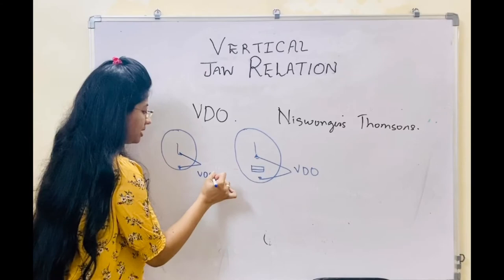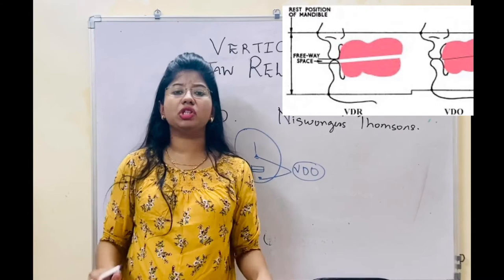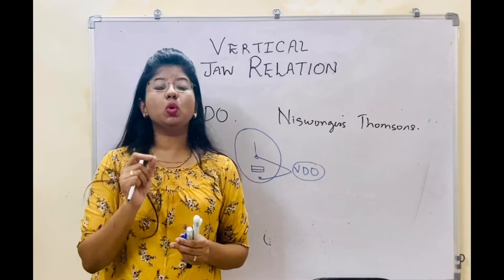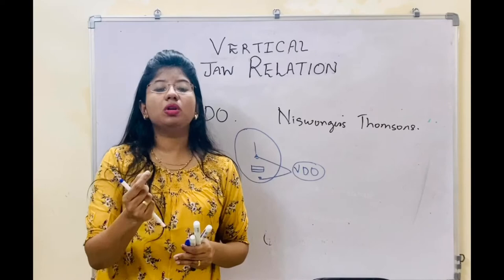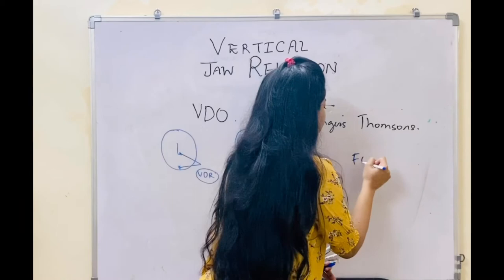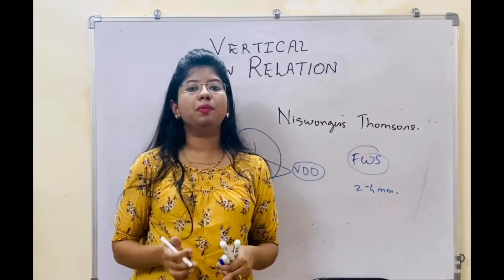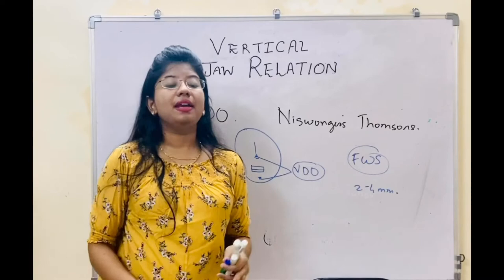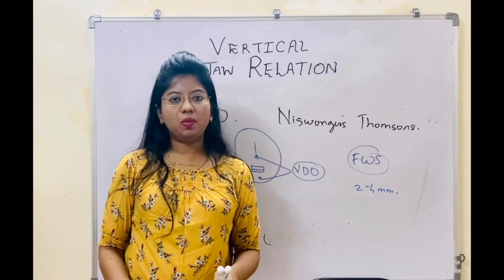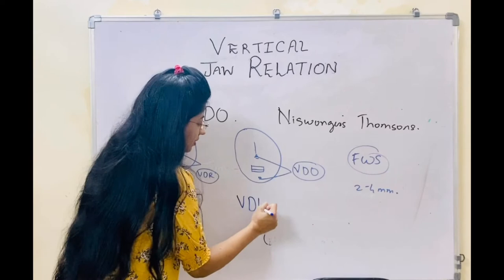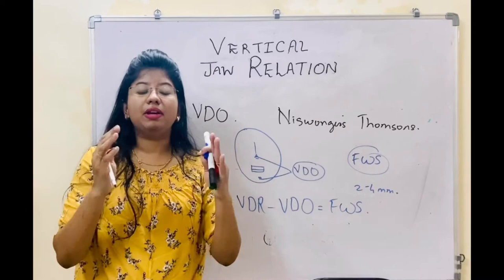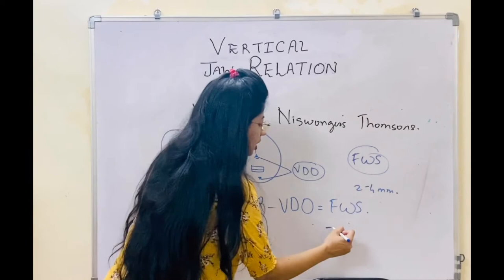Before going further into this method, it is important to explain freeway space. Inside the mouth, there is an amount of separation of 2 to 4 mm — whenever you close, the teeth will not touch each other; there is an amount of separation. That separation is called freeway space. This 2 to 4 mm of separation helps us to be in a comfortable position, in a state of tonic equilibrium. So we need to give this 2 to 4 mm of space in our denture as well.